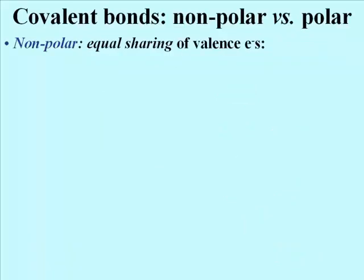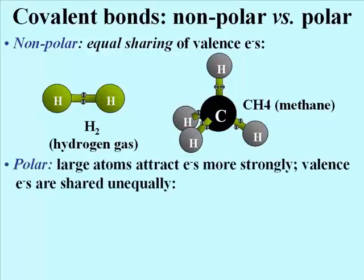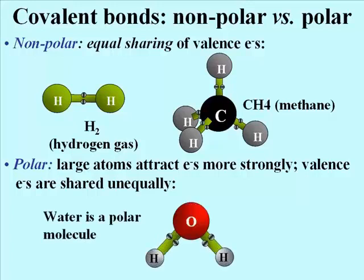Covalent bonds may also be nonpolar or polar. When atoms share their valence electrons equally, they form nonpolar covalent bonds, as in the hydrogen and methane gas molecules shown here. In water, the oxygen atom is much larger than the hydrogen atoms. Oxygen's larger nucleus thus draws the electrons from the hydrogen atoms more closely to its nucleus. The result is the oxygen acquires a partial negative charge, and each hydrogen, left with only its proton, has a partial positive charge. The Greek letter delta is used to indicate partial charge.